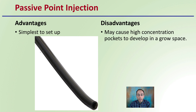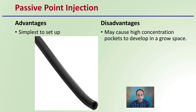Then there's also passive point injection. The advantage is that this is the simplest setup, in the sense that there's just one little end of a tubing and that's where your carbon dioxide comes out. The disadvantage is it may cause high concentration pockets to develop in the grow space, because you're really only having the distribution of that carbon dioxide at one central point.